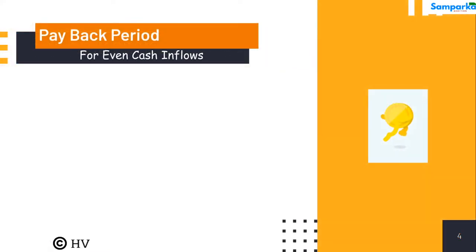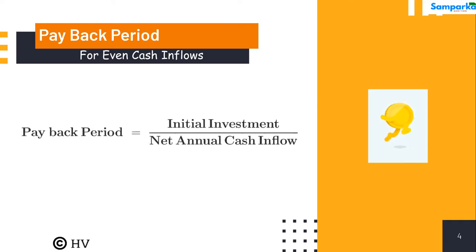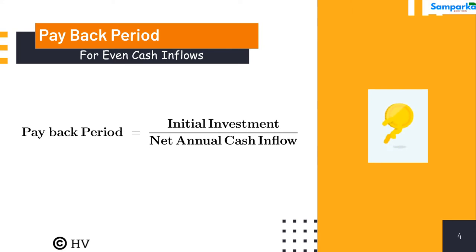The formula to calculate the payback period depends on whether the cash inflows from the project are even or uneven. When the cash inflows are even, the payback period can be ascertained by calculating net earnings before depreciation and after taxes — these are called net annual cash inflows — and then dividing the initial outlay by the net annual cash inflow.